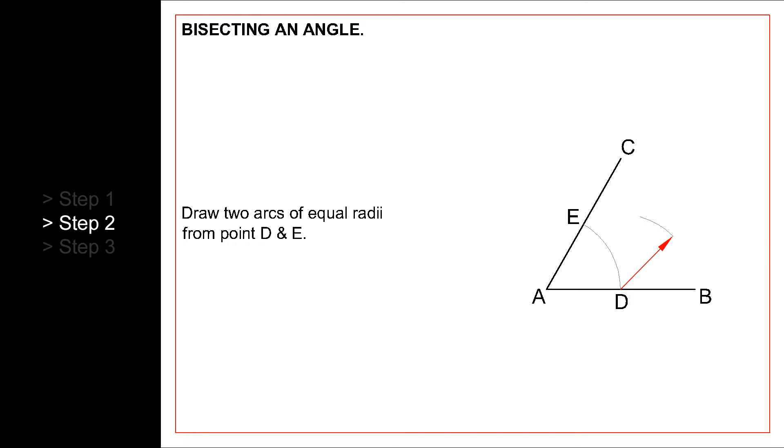Next, we draw two more arcs from points D and E. Those two arcs should have the same radius, otherwise this method will not work.